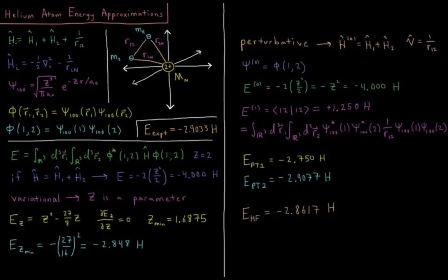So our Hamiltonian, we can actually factor into terms that depend just on electron 1 plus terms that depend just on electron 2, and then using atomic units, this repulsion of electron 1 from electron 2 is plus 1 over r12, a term that cannot be separated into a term depending on either r1 or r2.